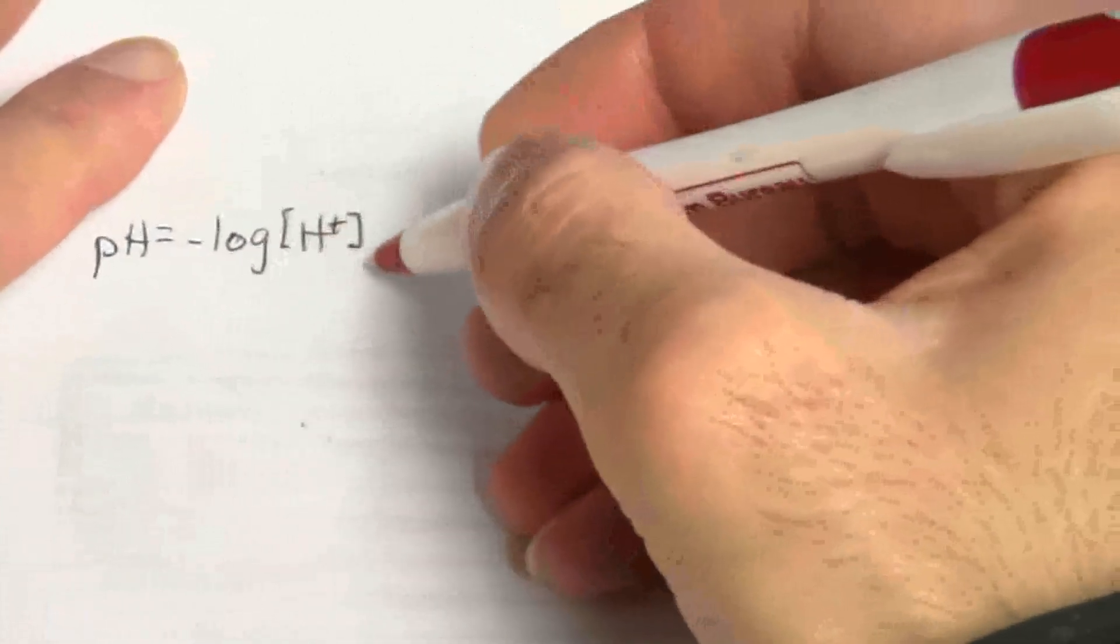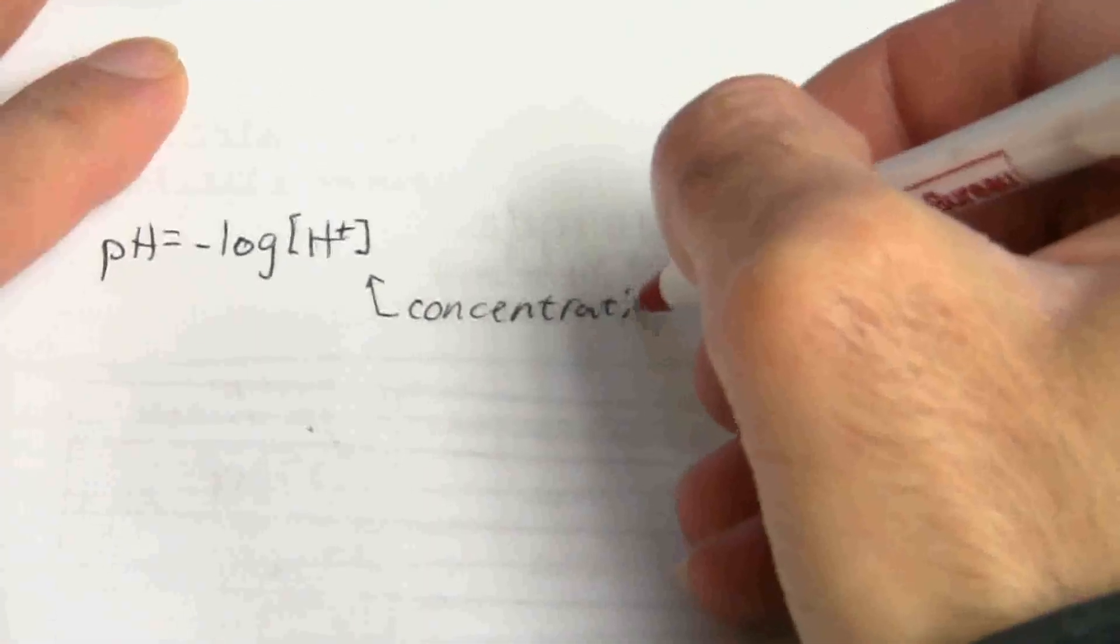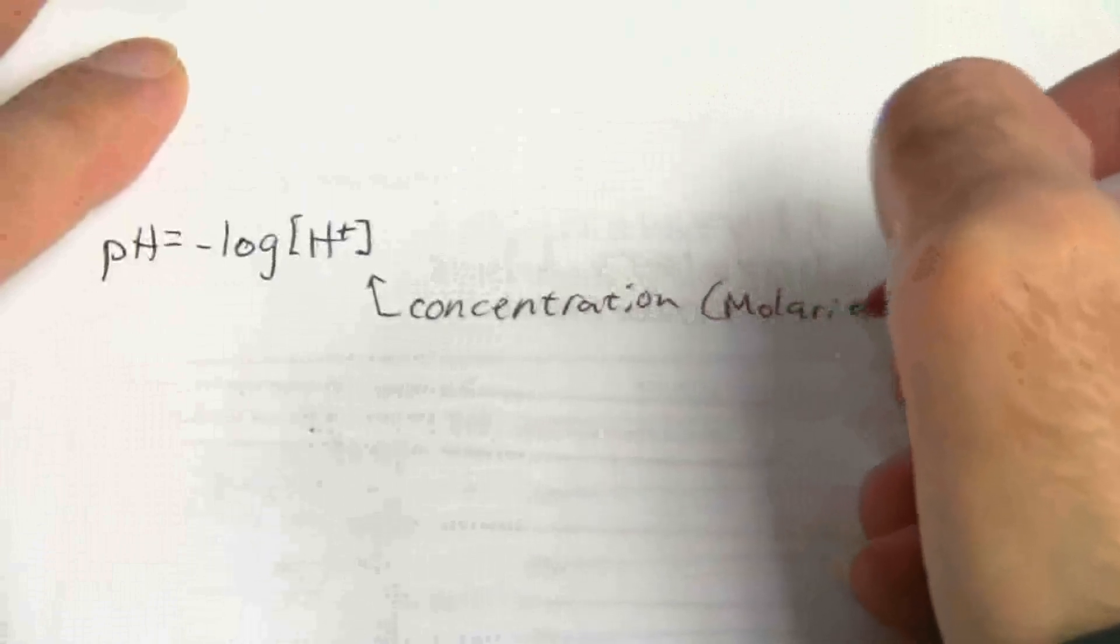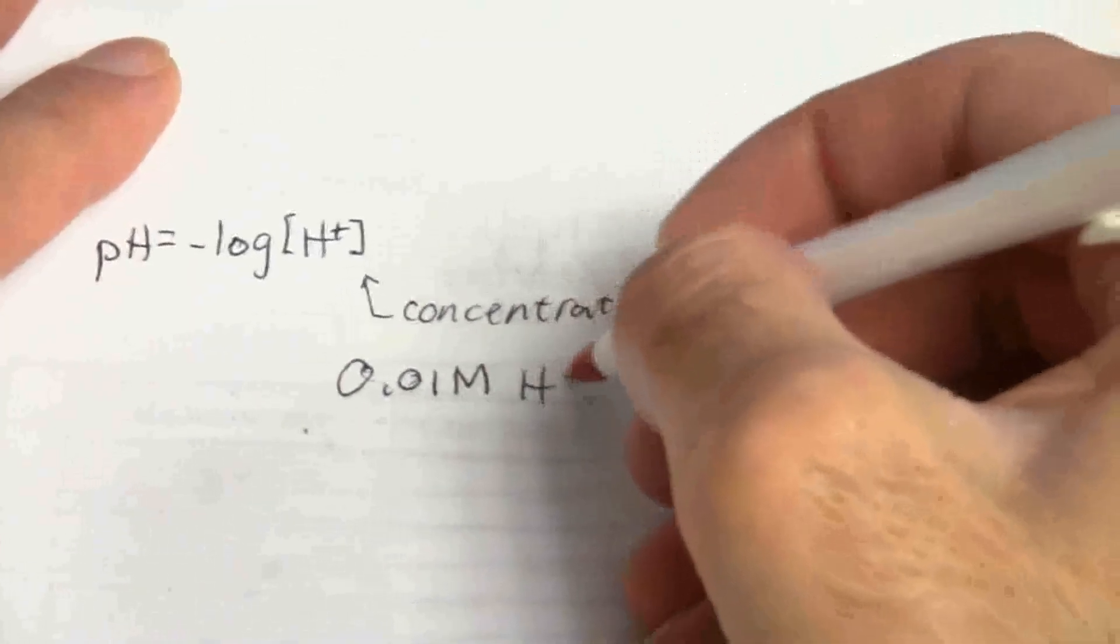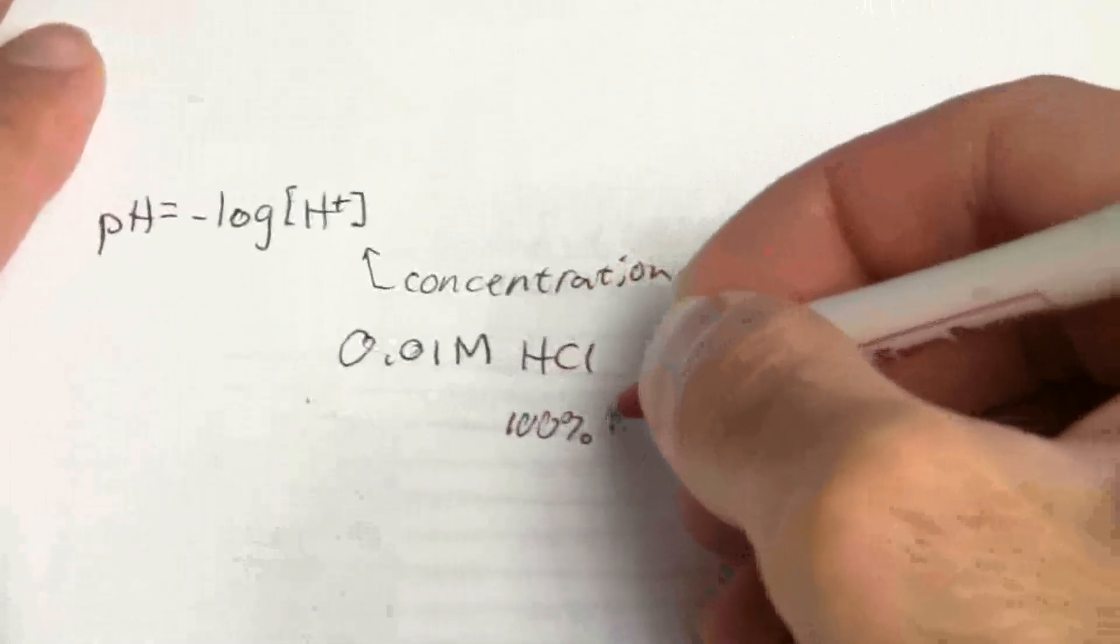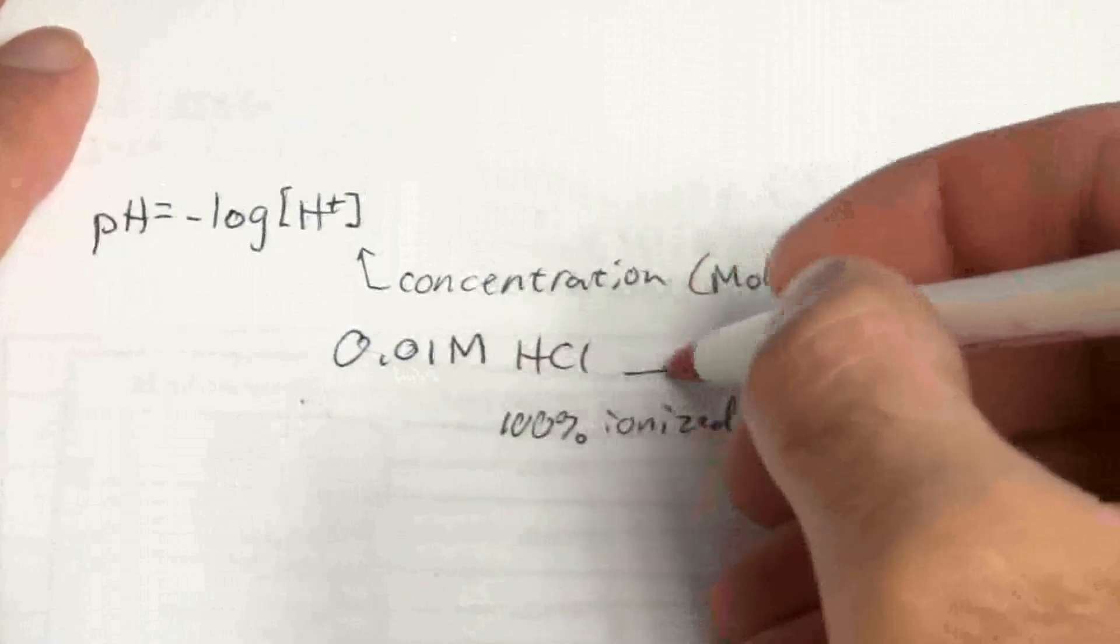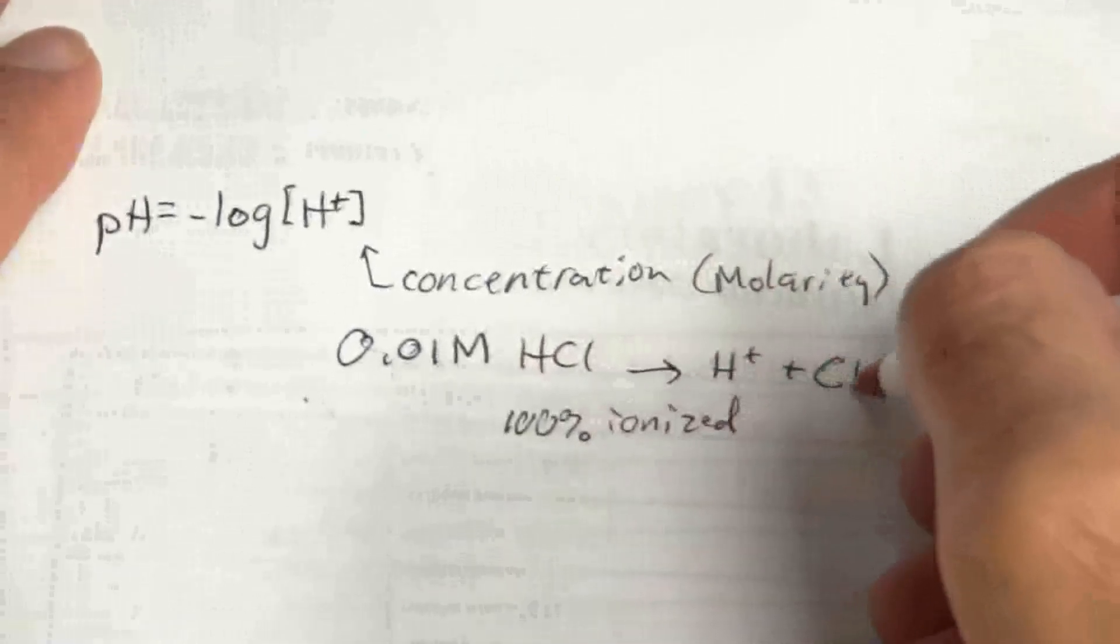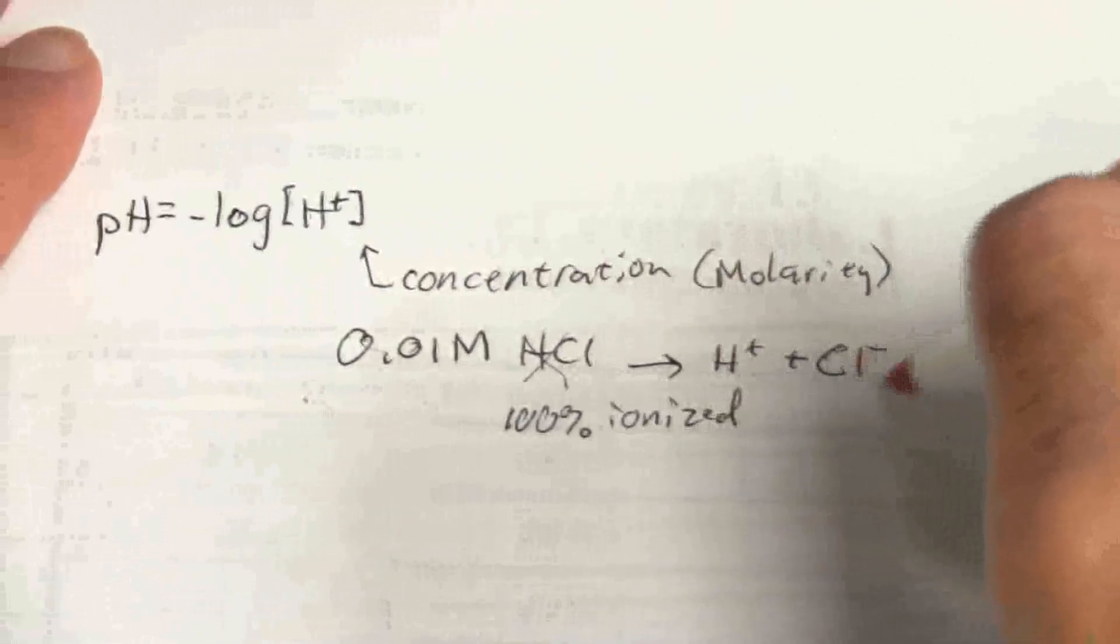So the hydrogen ion concentration, we use the brackets, they denote concentration, and that is in molarity, which is what we're given. We're given that is a 0.01 molar HCl solution. That's a strong acid which means it's a hundred percent ionized. Being a hundred percent ionized what that means is that HCl becomes H+ and Cl-. Once I put that in water there's really no more HCl, it's H+ and Cl-. But the concentration is still the same.